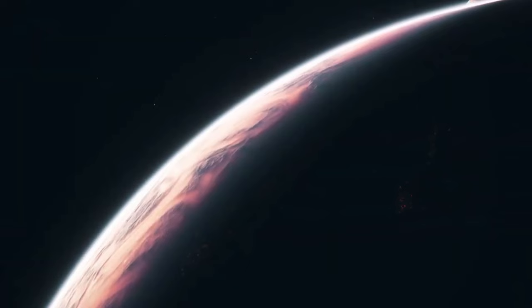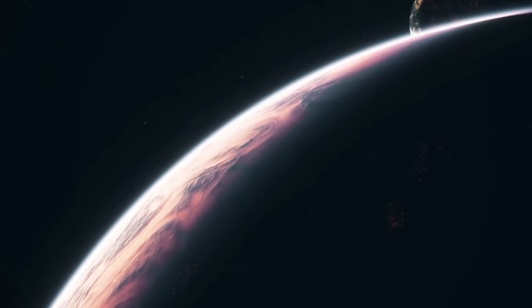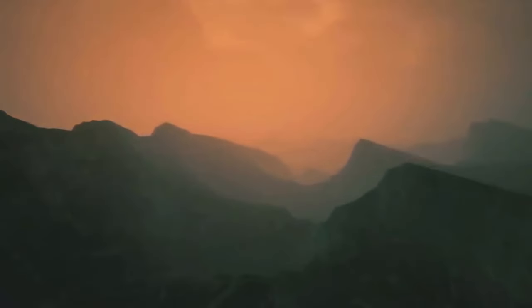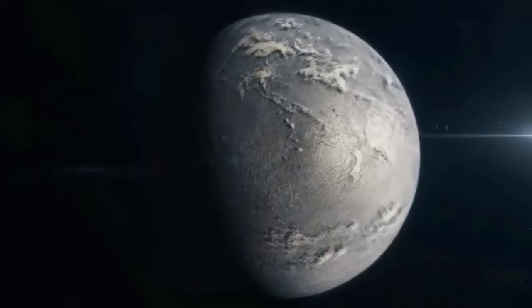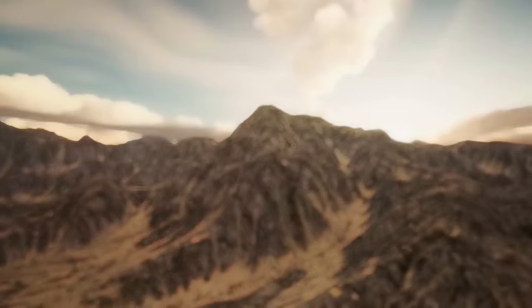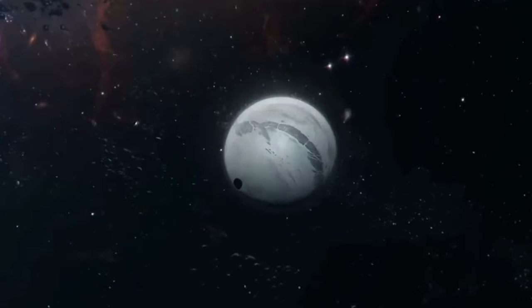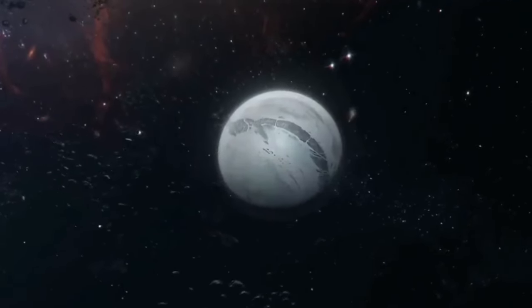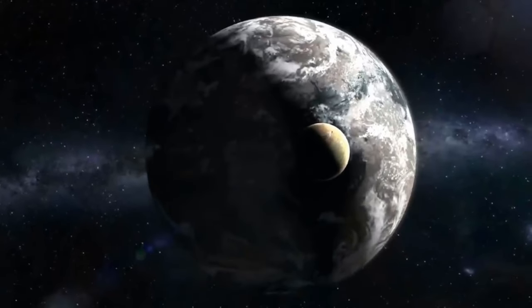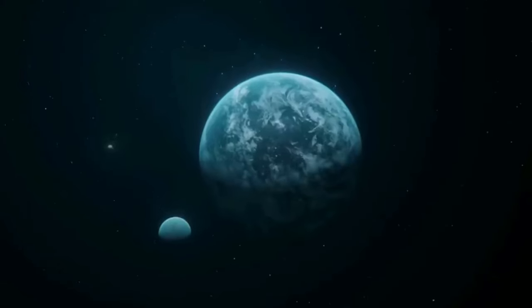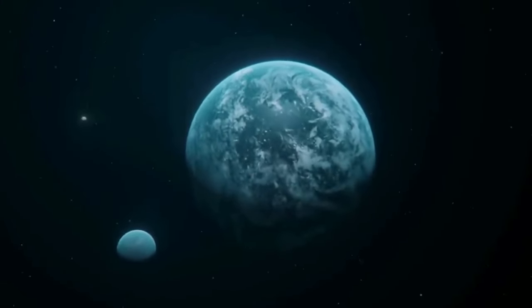The core, comprising a solid inner part and a liquid outer layer, played a crucial role in generating Earth's magnetic field. The movement of the liquid iron in the outer core creates a dynamo effect, producing the magnetic field that shields our planet from solar radiation and cosmic rays. This magnetic field has been crucial in maintaining Earth's atmosphere and making it hospitable for life.